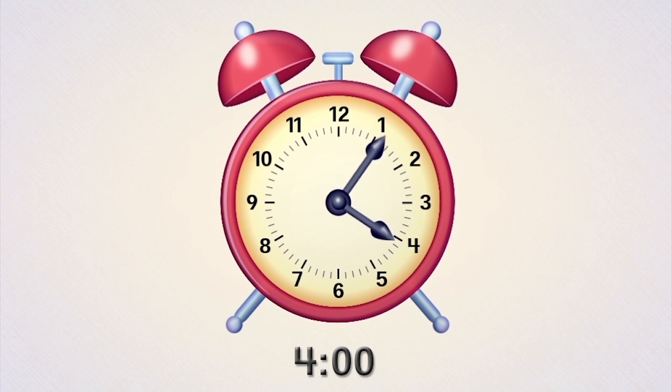As time goes on, the hour hand moves toward the five. This clock shows 4:30. The hour hand is halfway between four and five because 4:30 is halfway between four o'clock and five o'clock.